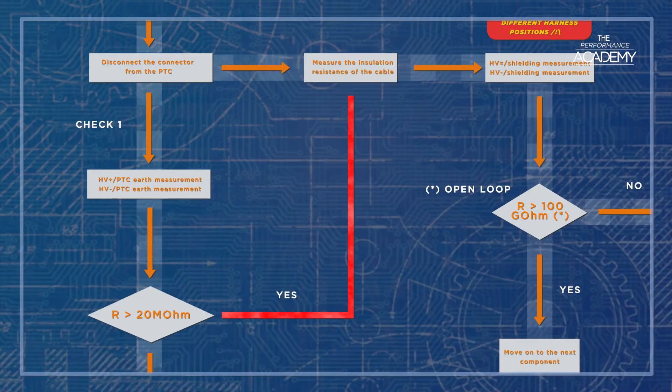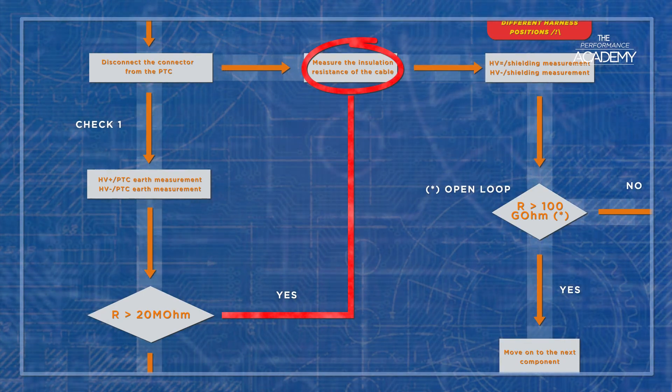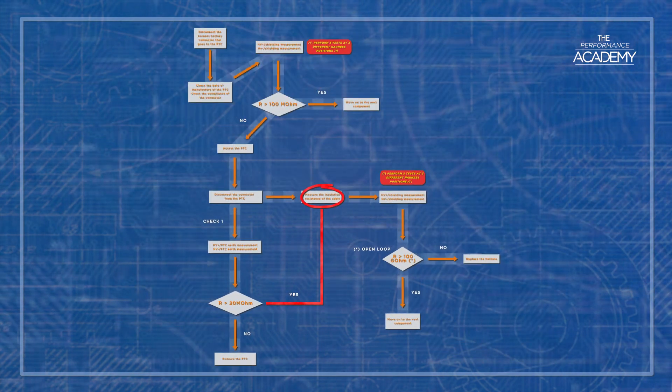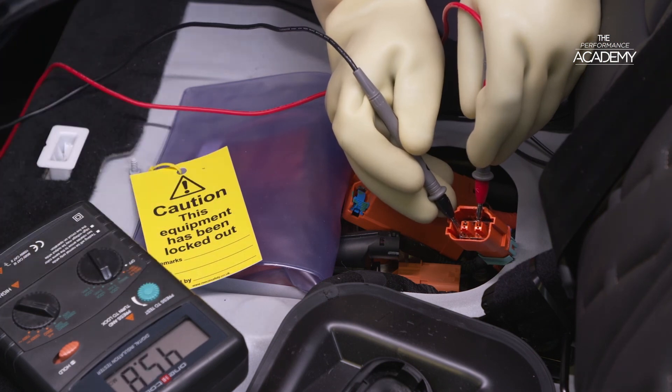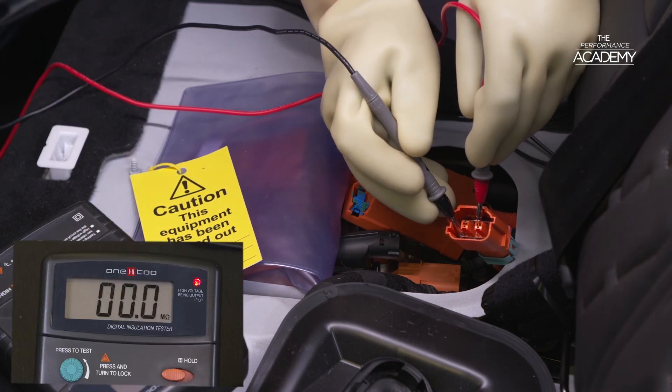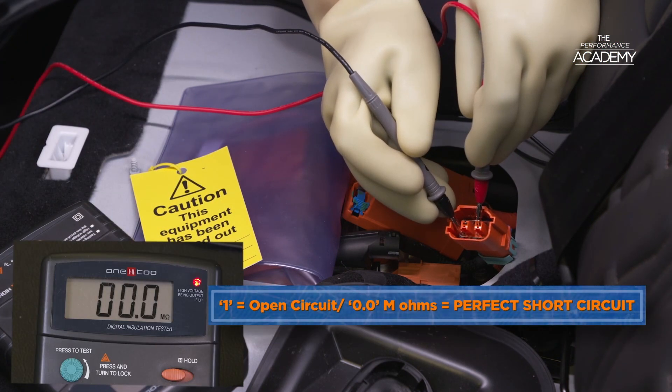If the PTC's heater insulation on test proves to be good, the instructions say check the insulation on the high voltage cable. By a logical diagnostic process then, this will show a short of the insulation. Remember, a high voltage cable should always give a perfect open circuit reading showing as one or infinity on the meter.